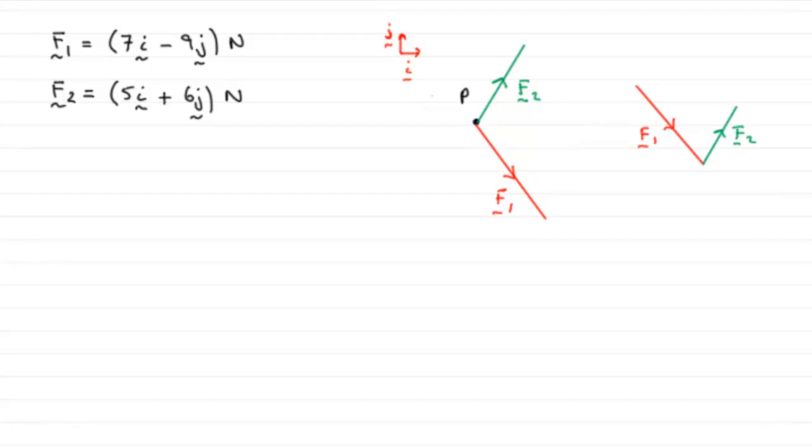That resultant force R is in fact going to be the vector that goes from here, we start from doing F1, just down to here, follow it with F2, it will be from here to here, it will be this vector here that is called R.